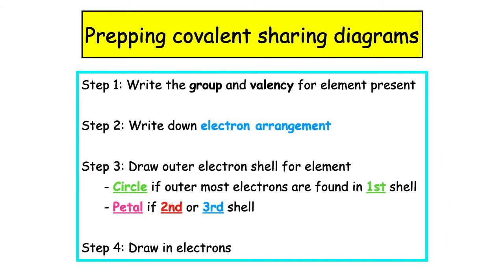I'm going to talk you through preparing for covalent sharing diagrams. It's really important that we're able to identify the shape of the shell to use for the elements present in a compound. Step one: write the group and valency for the element present. Step two: write down the electron arrangement, which can be found on page six of your chemistry data booklet.